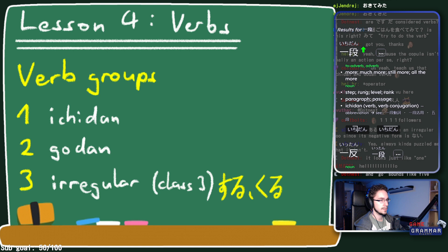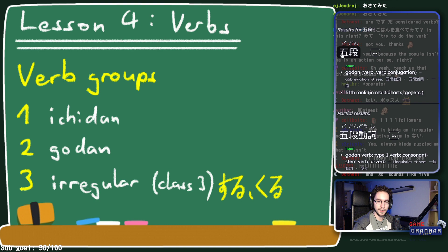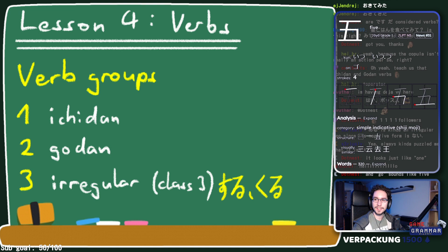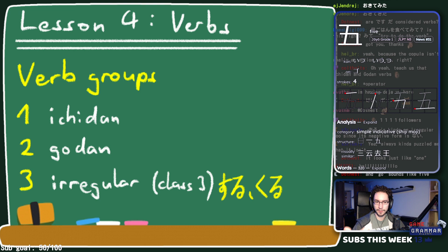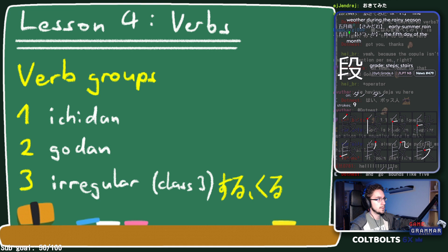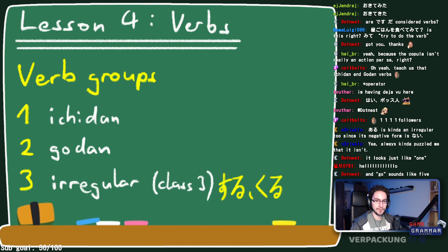Ichidan: one step. Godan: five steps — go sounds like five. You'll also find other names: ichidan verbs are often called ru-verbs, or iru/eru verbs. Godan verbs are often called u-verbs, though that's not the most accurate name in my opinion, which is why I prefer ichidan and godan.